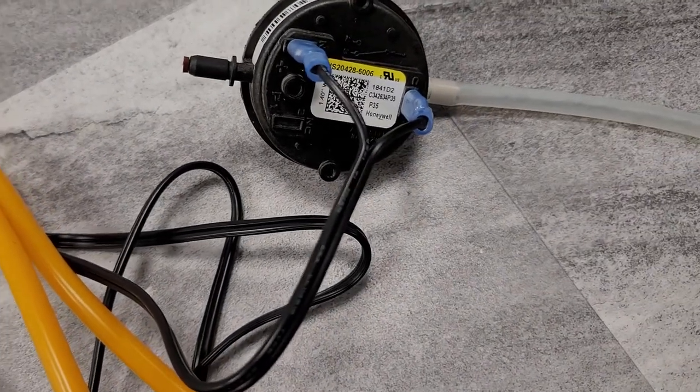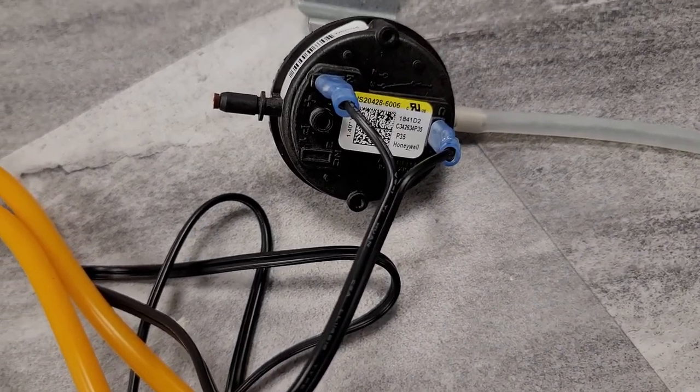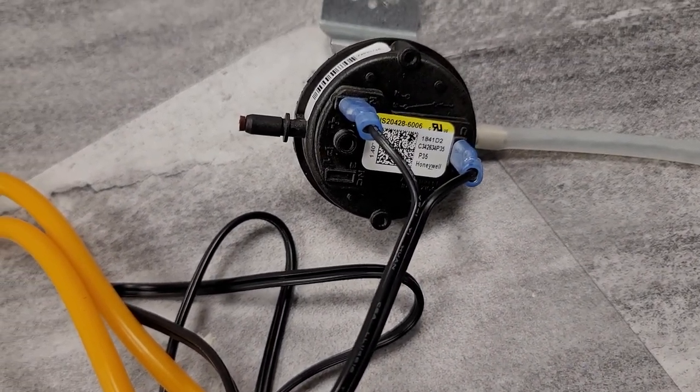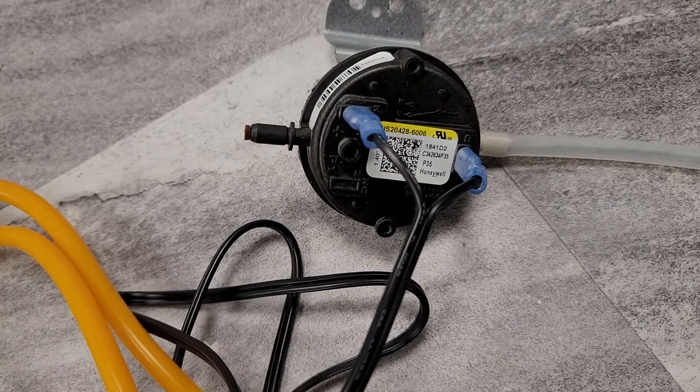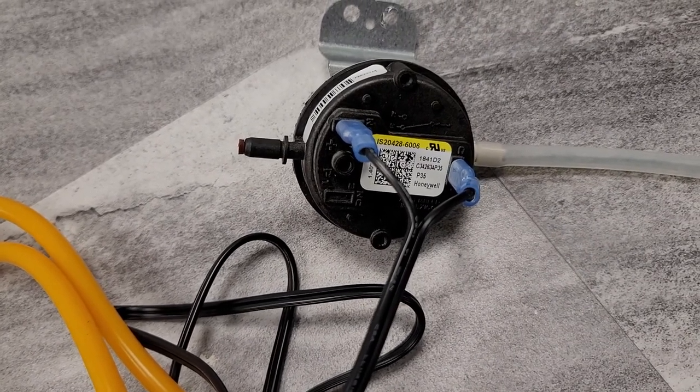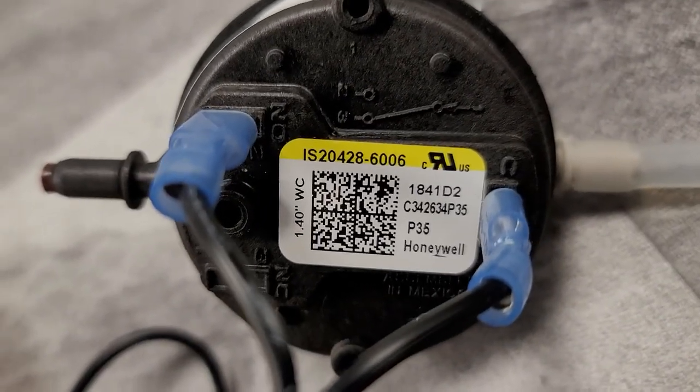I keep having issues where the power is intermittently going through this pressure switch, causing the flame to go out. This would usually make you think it might be a flame sensor, but I'm looking at this pressure switch.